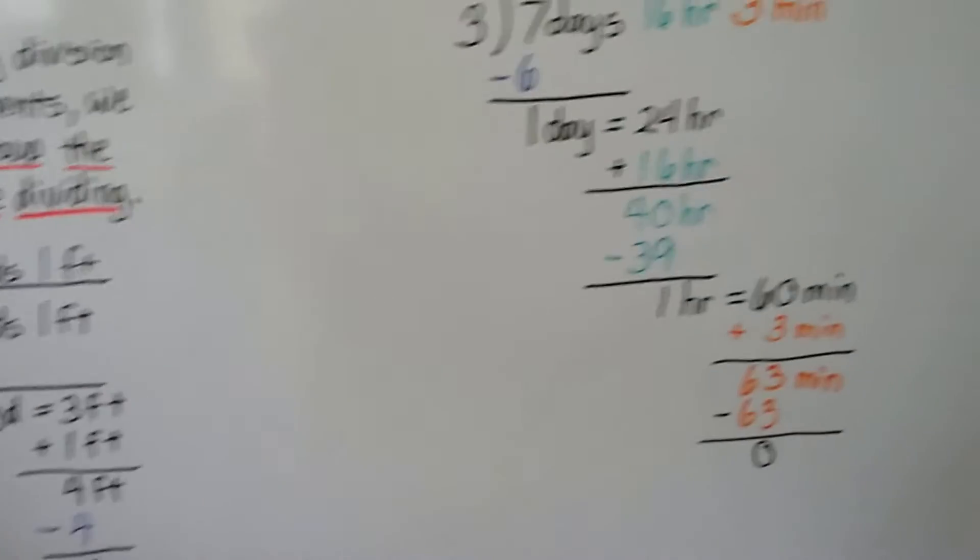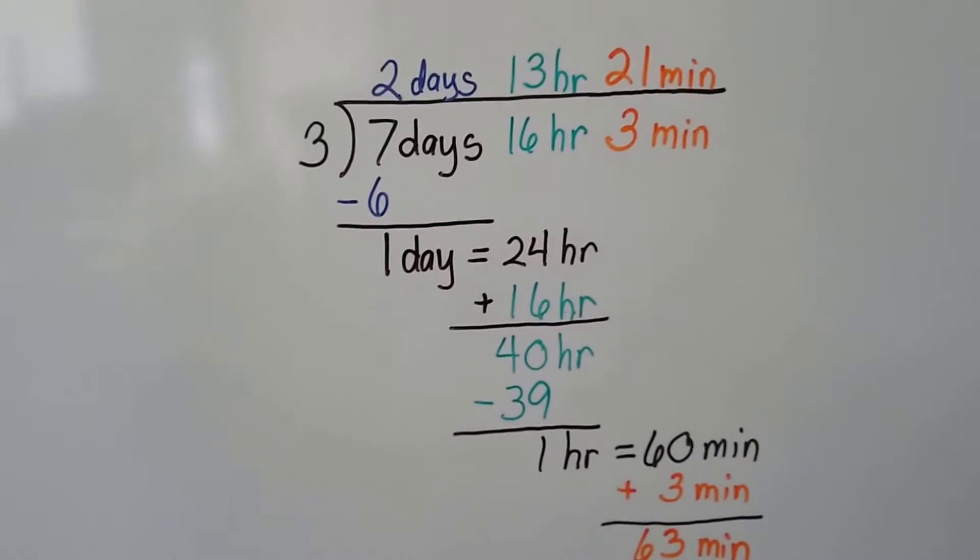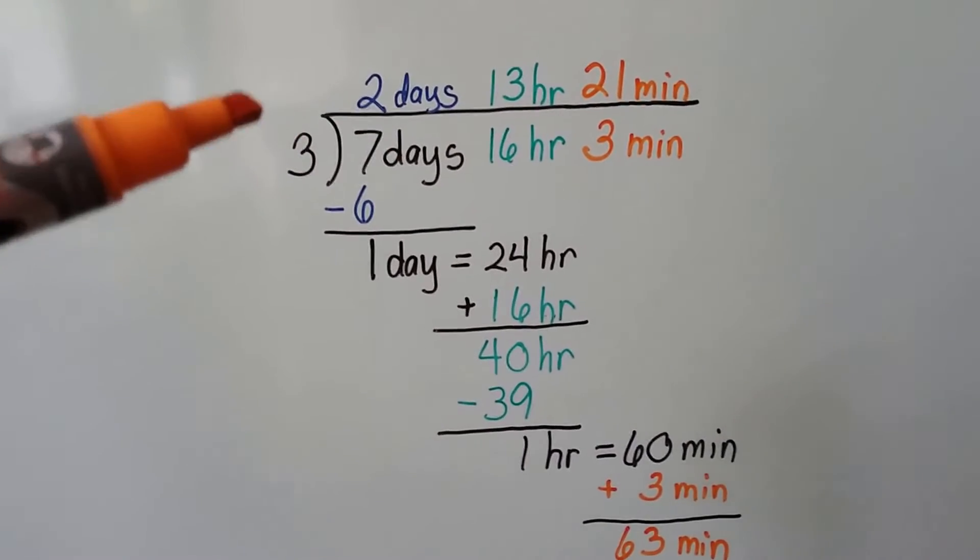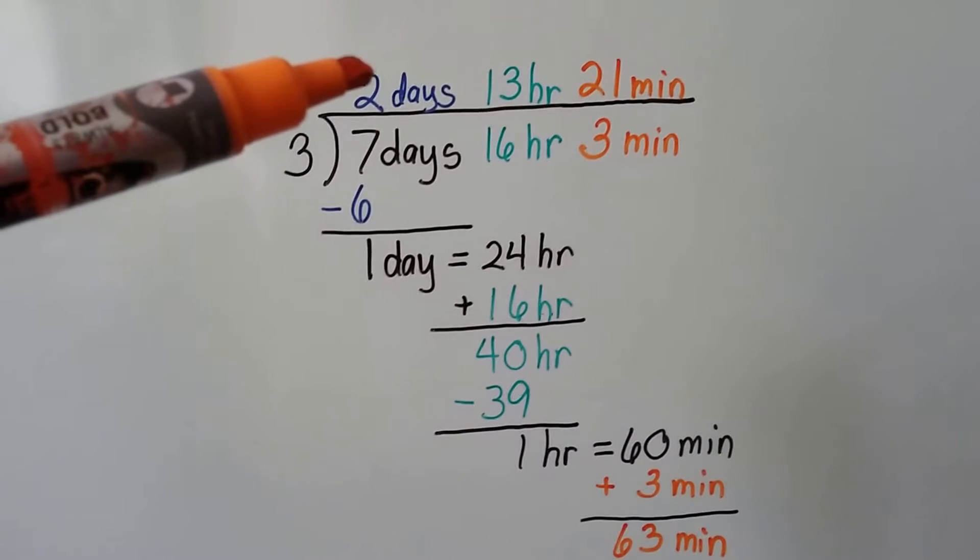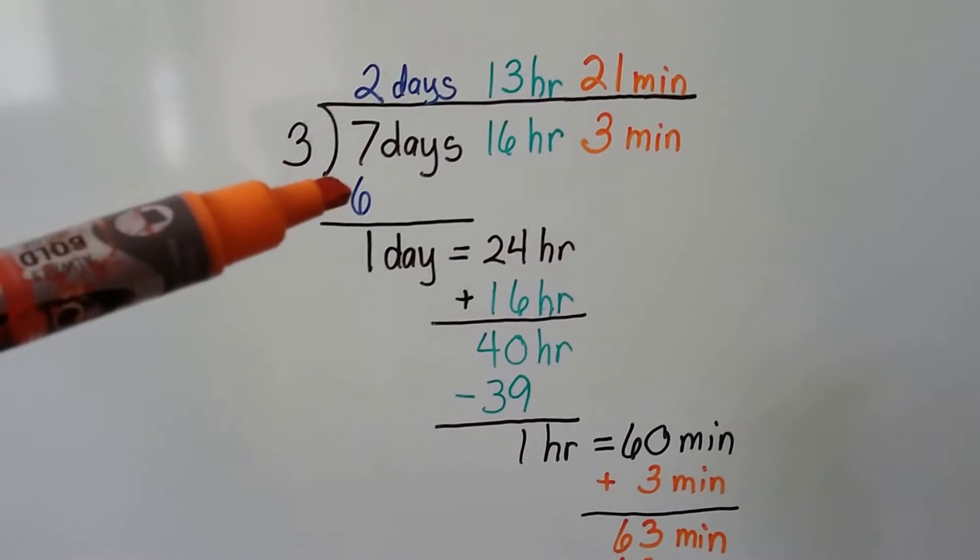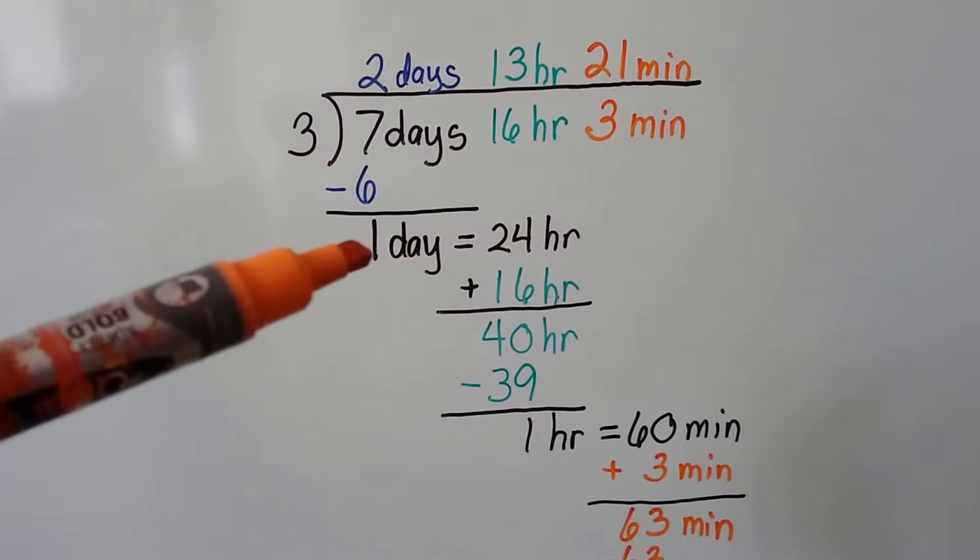Let's try this one. It's a little bit longer. We have 7 days, 16 hours and 3 minutes and we're dividing it by 3. 3 can go into 7 two times. 3 times 2 is 6. We do our subtraction and get 1 day.